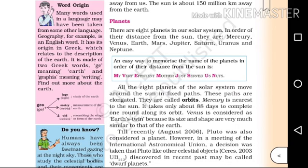Word origin: many words used in a language may have been taken from some other language. Geography, for example, is an English word. It has its origin in Greek.